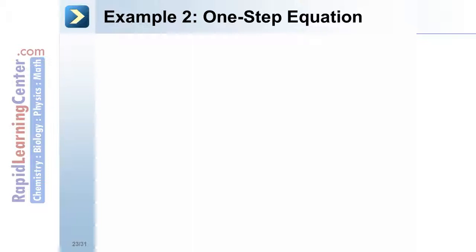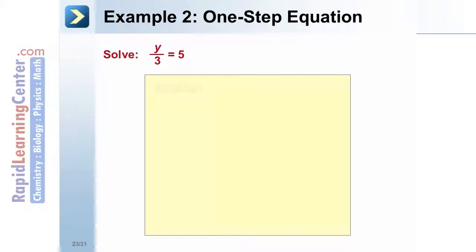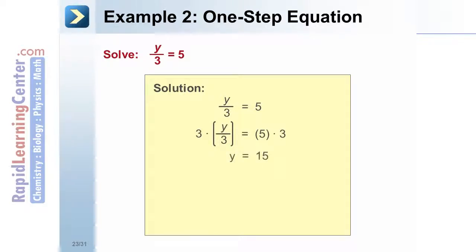Example 2 — one-step equation: solve the equation y over 3 equals 5. Solution: perform the inverse operation and multiply by 3 on both sides. y equals 15. To check the solution, substitute 15 into the original equation. Since both sides are equal, the solution is verified.